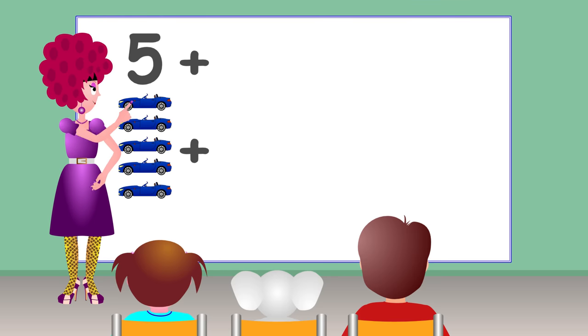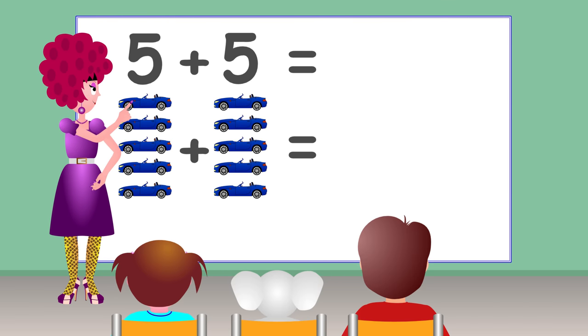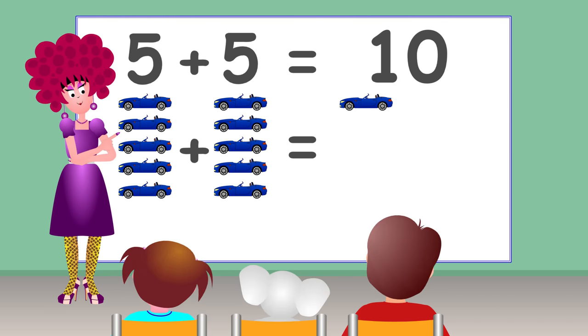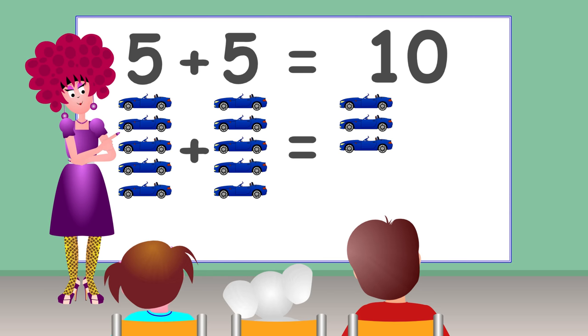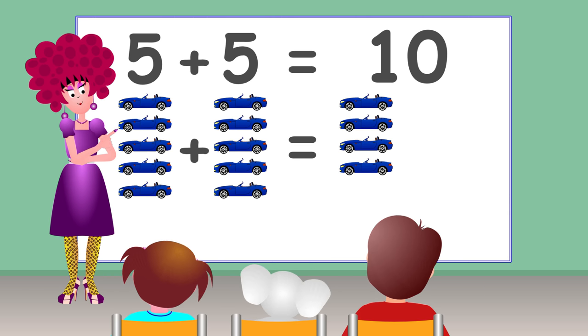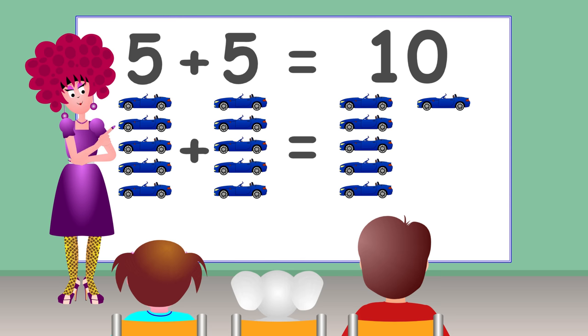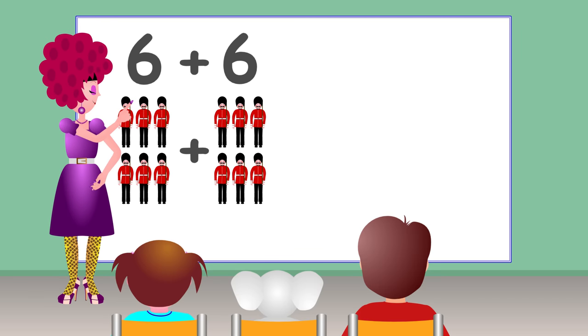Car. Five plus five equals ten. One, two, three, four, five, six, seven, eight, nine, ten. Six plus six equals twelve.